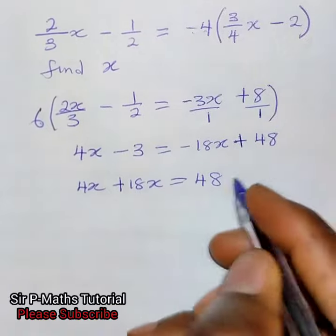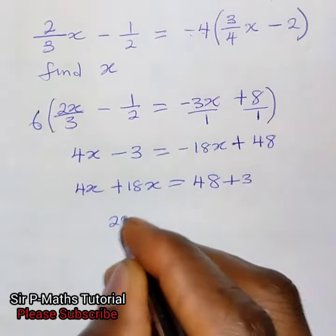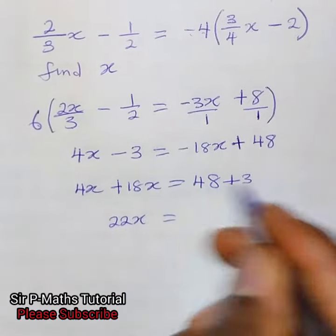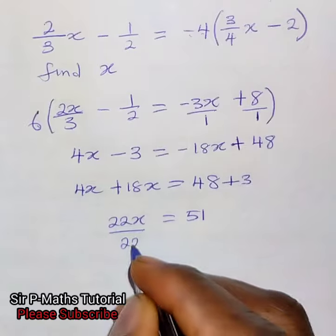This guy will come over plus 3. Add here we have 22x equal to, add here I will have 51. Then we divide both sides by 22.